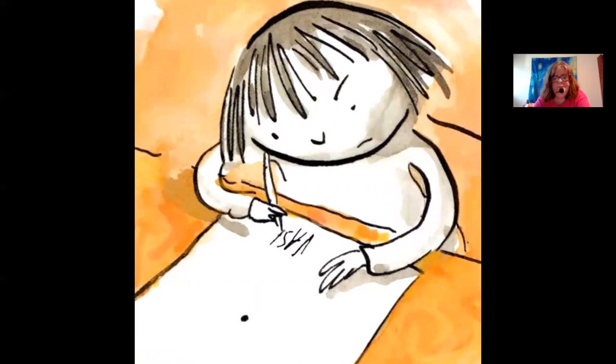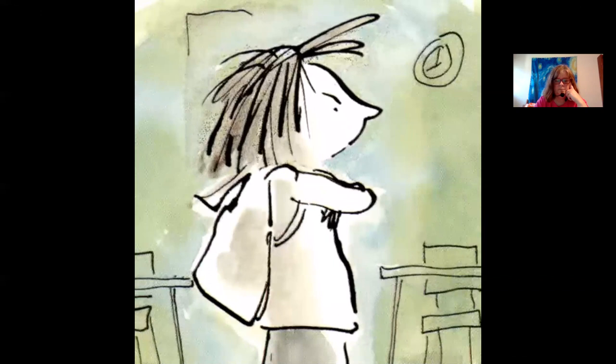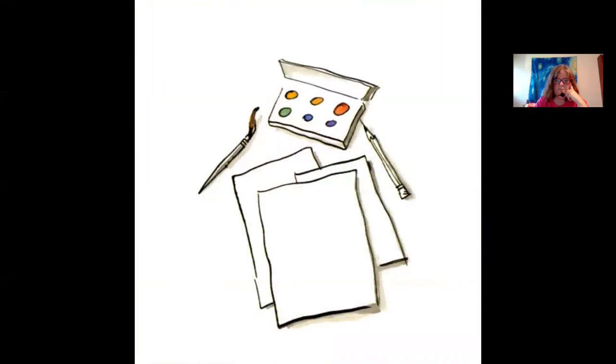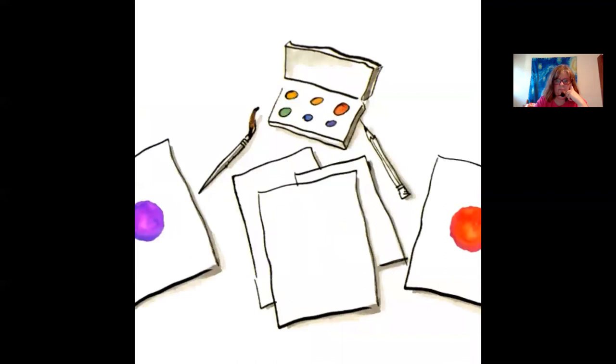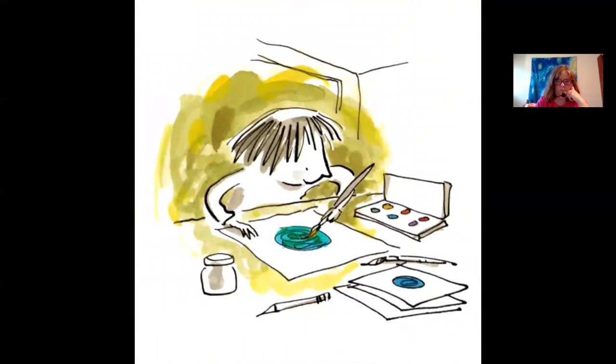Vashti thought, 'Well, maybe I can't draw, but I can sign my name.' The next week, when Vashti walked into art class, she was surprised to see what was hanging above her teacher's desk. It was the little dot she had drawn — her dot, all framed in swirly gold. 'I can make a better dot than that.' She opened her never-before-used set of watercolors. A red dot, a purple dot, a yellow dot, a blue dot. The blue mixed with yellow and she discovered she could make a green dot.